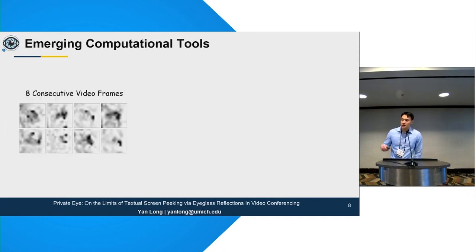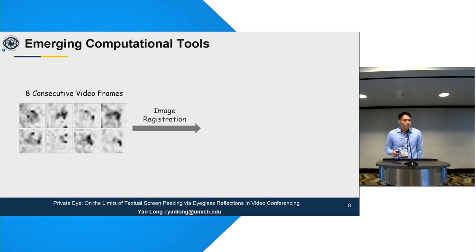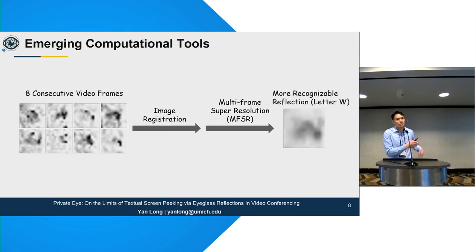Besides better camera hardware, there are also emergent computational tools that could potentially help adversaries get more information from reflections. For example, by taking eight consecutive video frames captured by the video camera, you can do simple image registration and use existing multi-frame super resolution techniques to combine these frames and reconstruct a higher quality, more recognizable image.